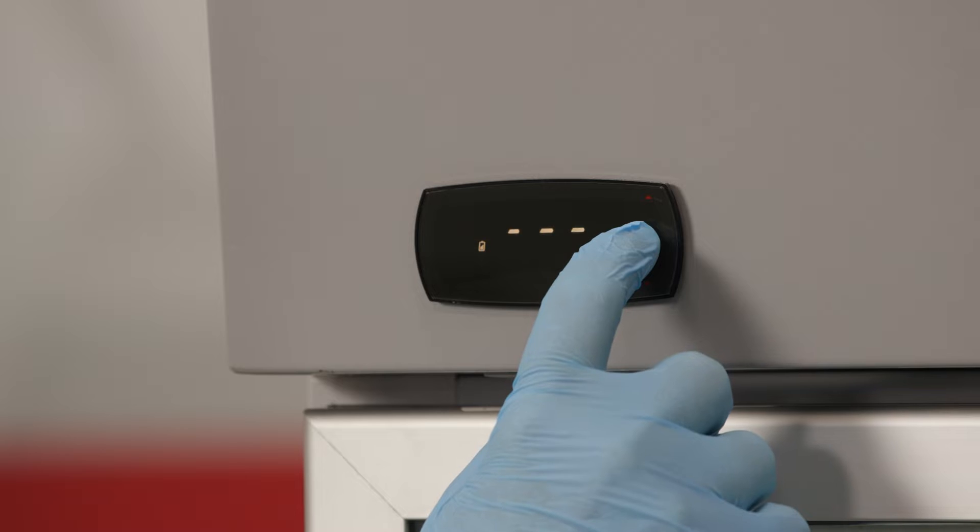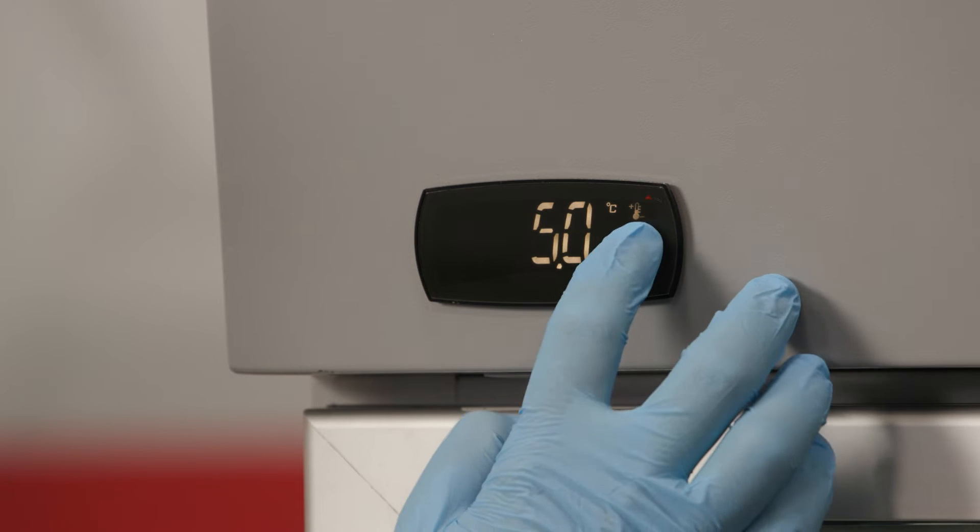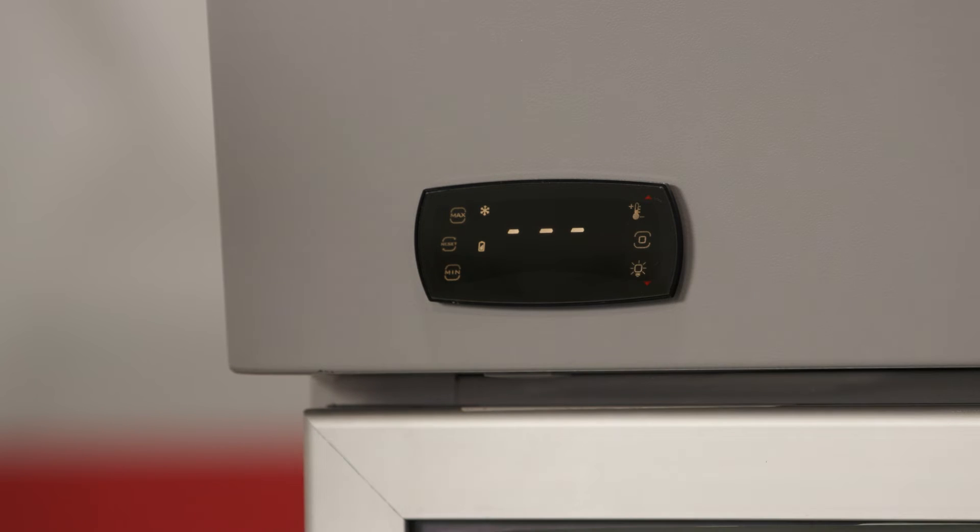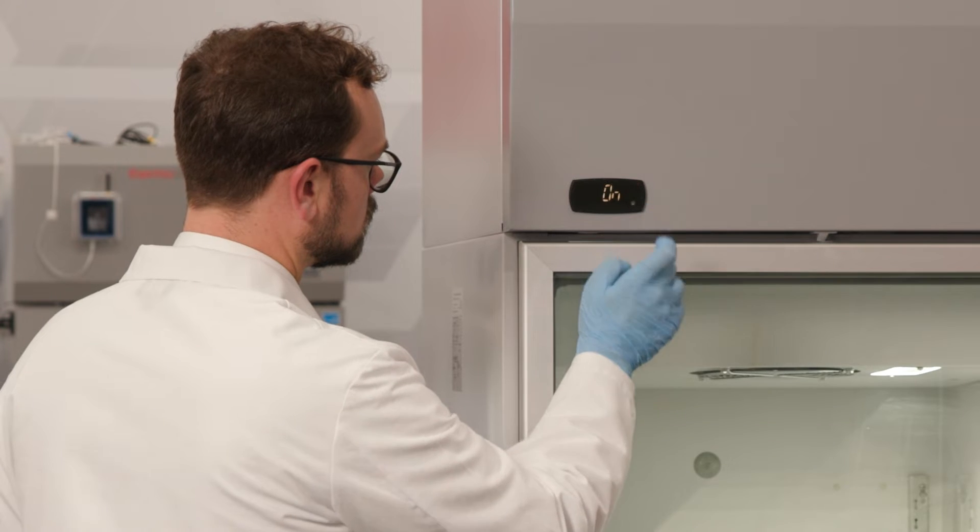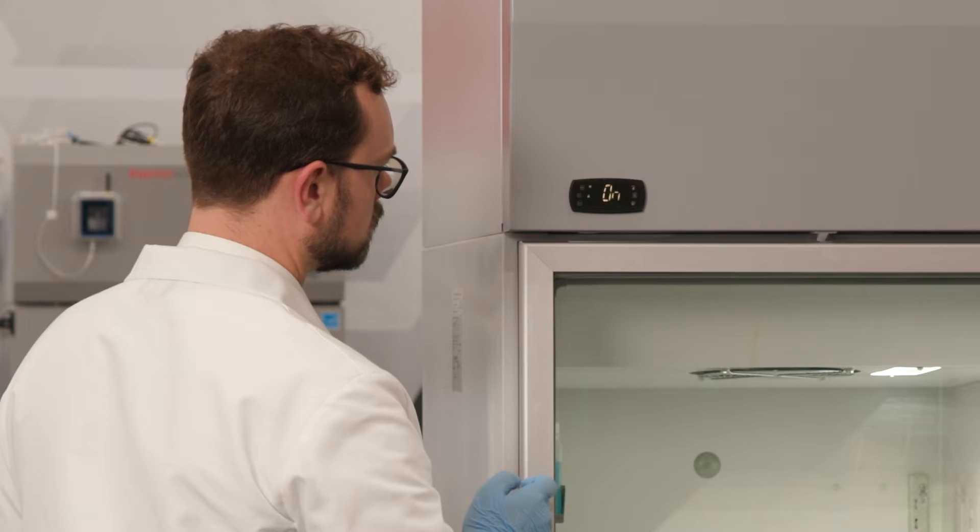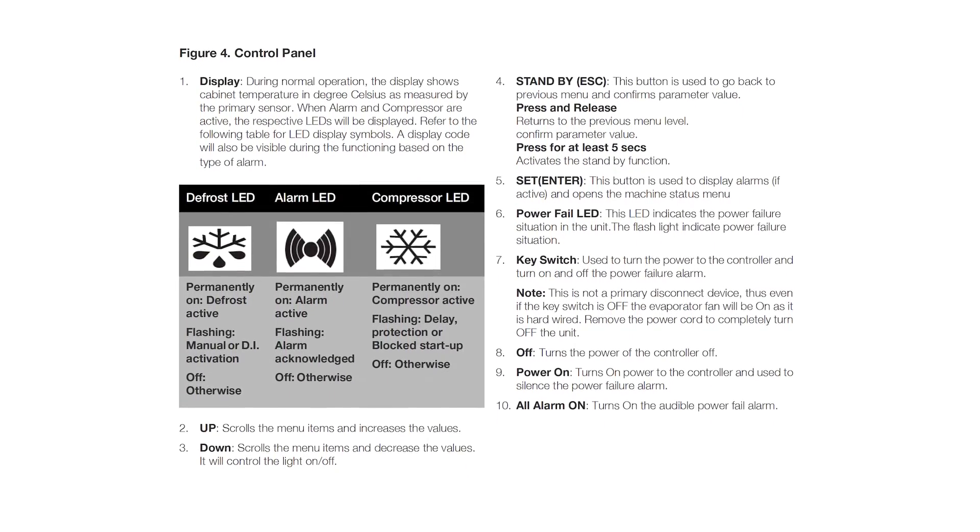Press the setpoint button on the upper right to view the current setpoint. Press the program button to view the various functions. A flashing icon means that its function is disabled. Toggle the function on or off by pressing its icon. Please refer to the user manual for a full overview of icons and their associated functions.